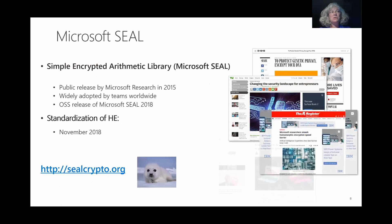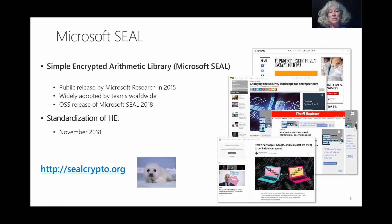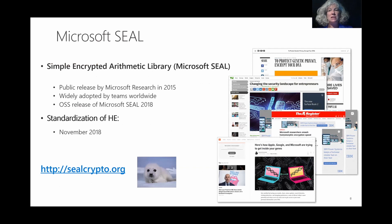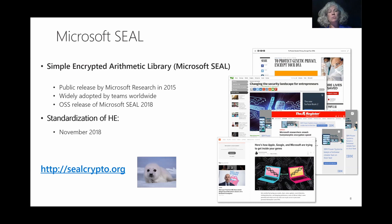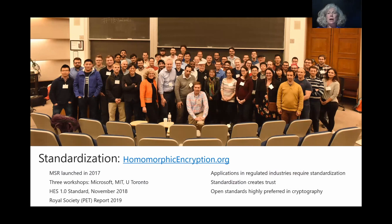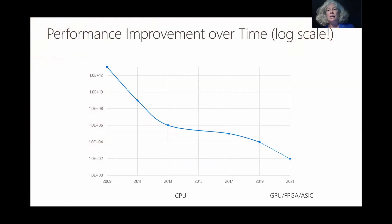Microsoft SEAL is a simple encrypted arithmetic library which we released publicly in 2015, and it's been widely adopted and used by teams worldwide. There was an open source release of Microsoft SEAL in 2018, which means it can be used for commercial purposes as well. It's available for download at sealcrypto.org. We also worked very hard over the last three years on a standardization process for homomorphic encryption. We have a worldwide community at homomorphicencryption.org which has agreed on secure parameters for using homomorphic encryption in practice — you can go there and download the standard.